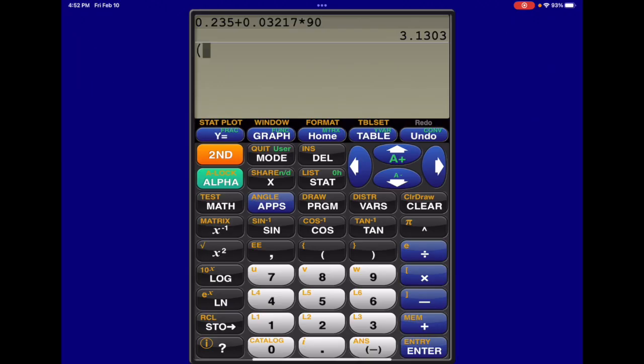We take open parentheses. We put in the Y value, 3.01. We subtract the Y hat value, 3.1303. We end the parentheses, and then we square that.